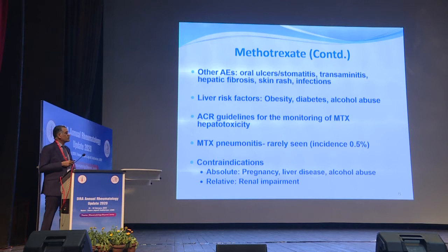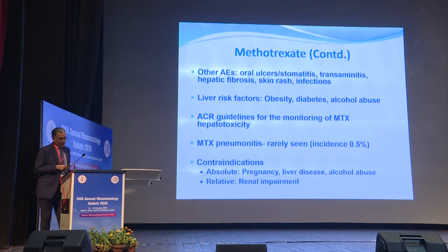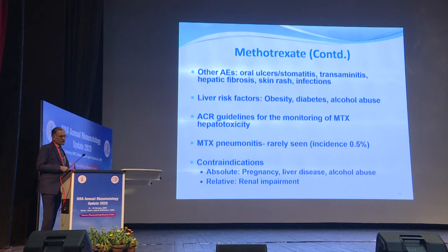Liver risk factors for methotrexate toxicity include obesity, diabetes, and alcohol abuse, so vigilance is needed. There are published American College of Rheumatology guidelines on monitoring methotrexate hepatotoxicity. Methotrexate pneumonitis is rarely seen — it is a hypersensitivity pneumonitis with a reported incidence of 1 in 200, generally occurring in the first few weeks to months after starting methotrexate, but generally not beyond 6 months.